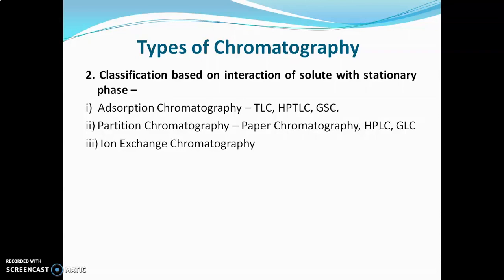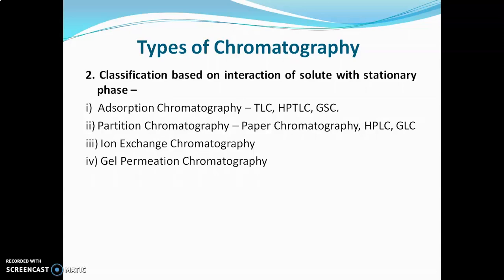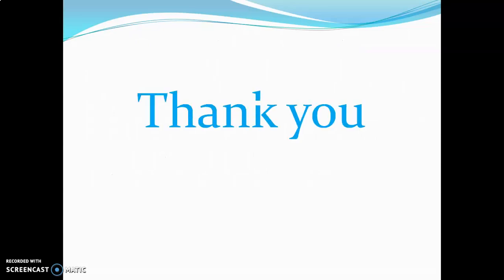Next class is ion exchange chromatography, where separation occurs due to an ion exchange mechanism. Next is gel permeation chromatography, also known as size exclusion chromatography, where separation of solute molecules occurs due to differences in their size or molecular weight. These are the types of chromatography. I hope you understood all these concepts. Thank you for watching my video.